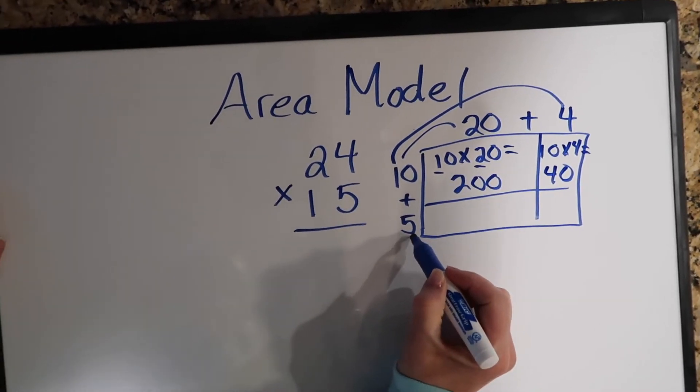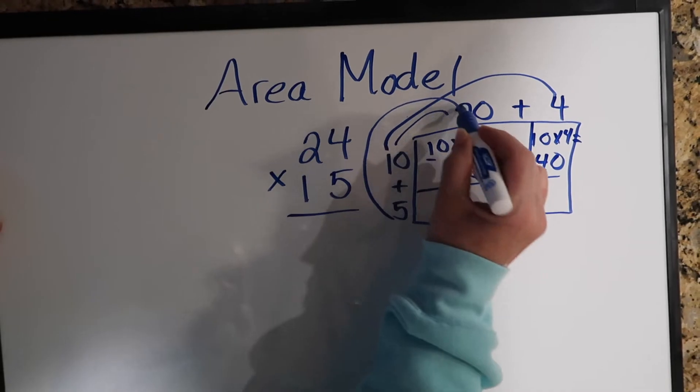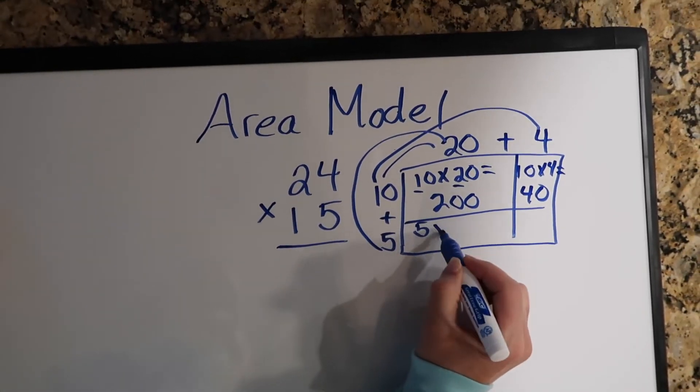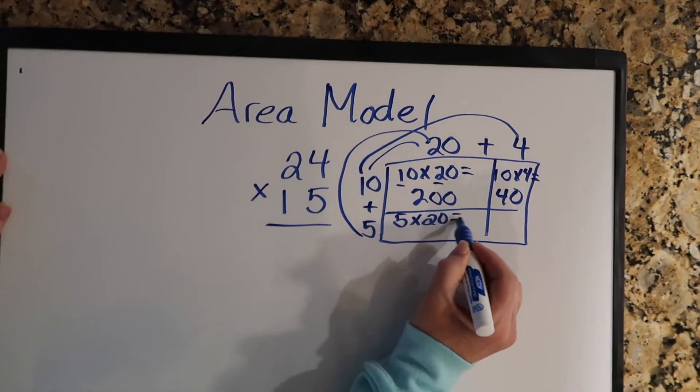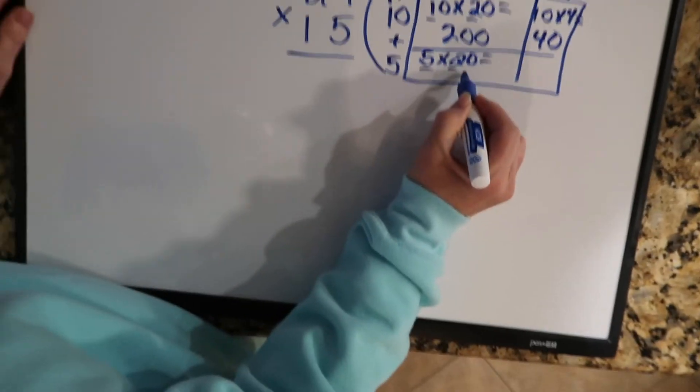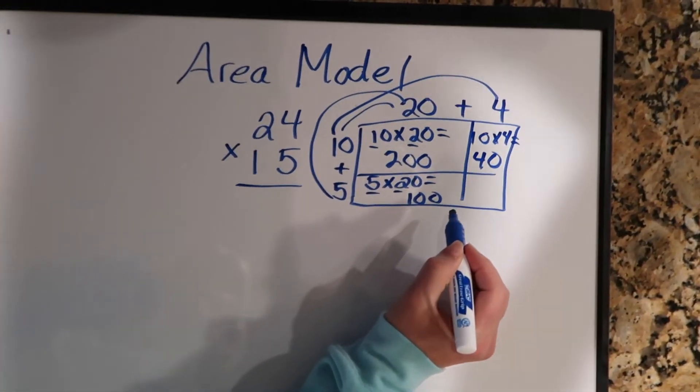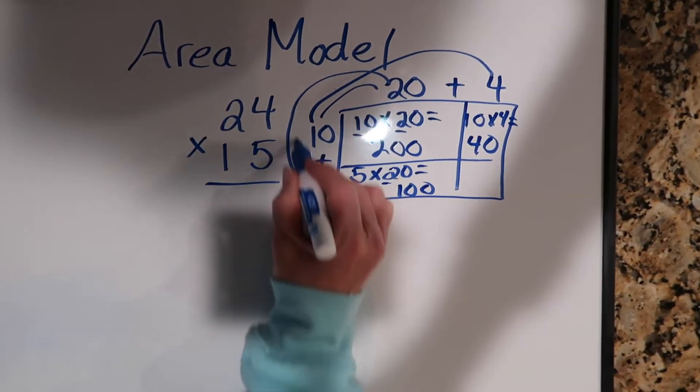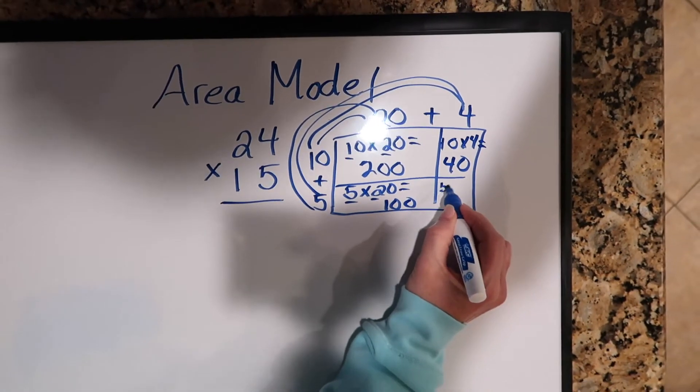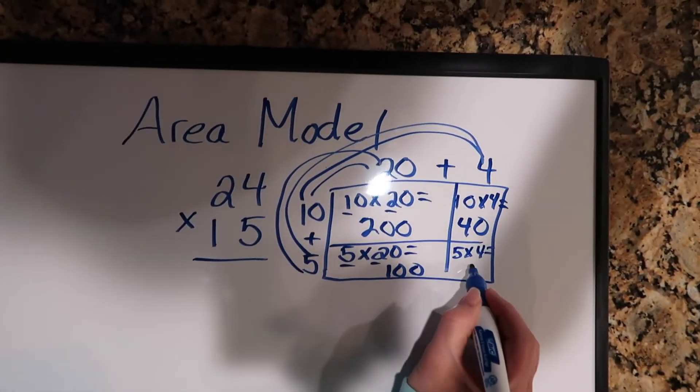Now we're going to start with the 5. We're going to multiply the 5 times the 20. And your basic facts are 5 times 2, which is 10, and bring the other zero down. And then 5 times 4, which is 20.